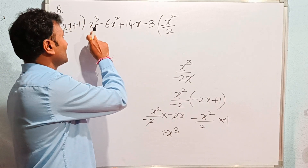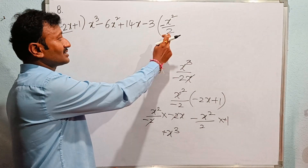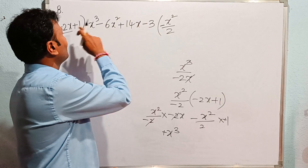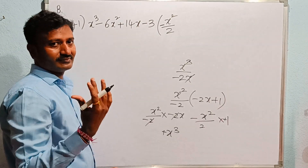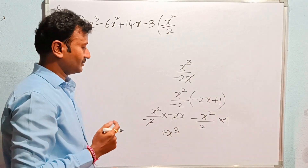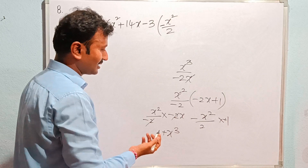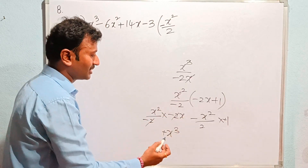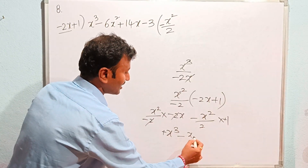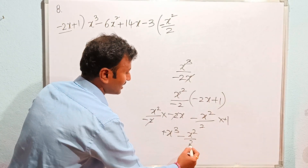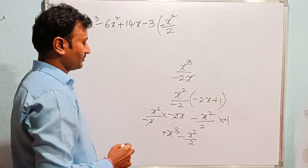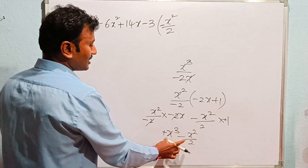If you divide by two, you will get the answer. I will show you — it is a simple trick. If you divide by two and ask the same, you get the same answer. This is the answer.